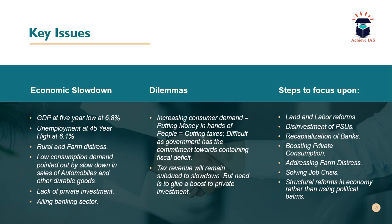Addressing farm distress is also critical. Agriculture is the largest employer in the country, but farm distress is high, agricultural growth is low, and the remuneration available to farmers is not viable or sustainable. Another priority is solving the job crisis — unemployment is at a 45-year high of 6.1%. With a large youth population, we must provide jobs and skilling activities so that young people can become viable in the job market.